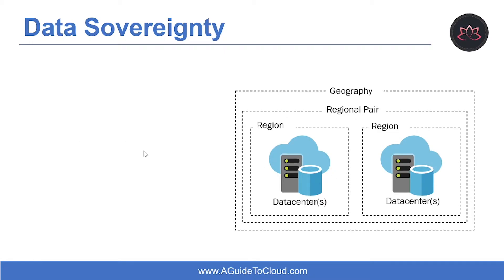In the event of an outage affecting multiple regions, one region in each pair will be prioritized for recovery. The first benefit of Azure paired regions is physical isolation — when possible, Azure services prefer at least 300 miles of separation between data centers. This reduces the likelihood of both regions being affected simultaneously by natural disasters, civil unrest, power outages, or physical network outages.